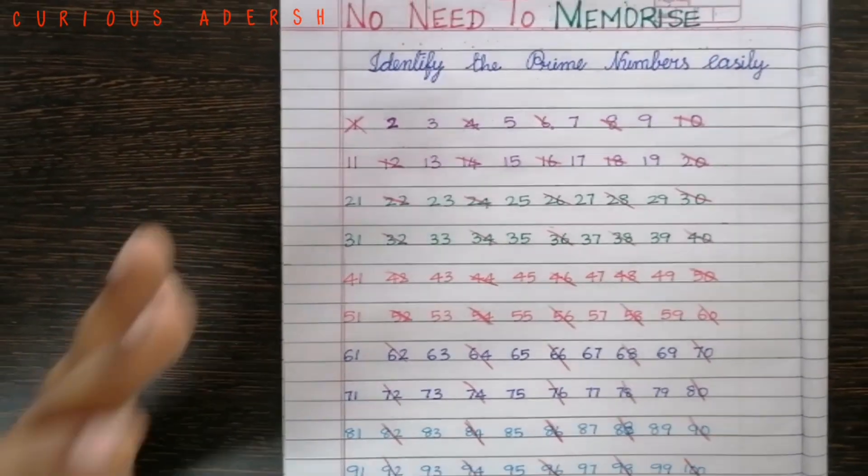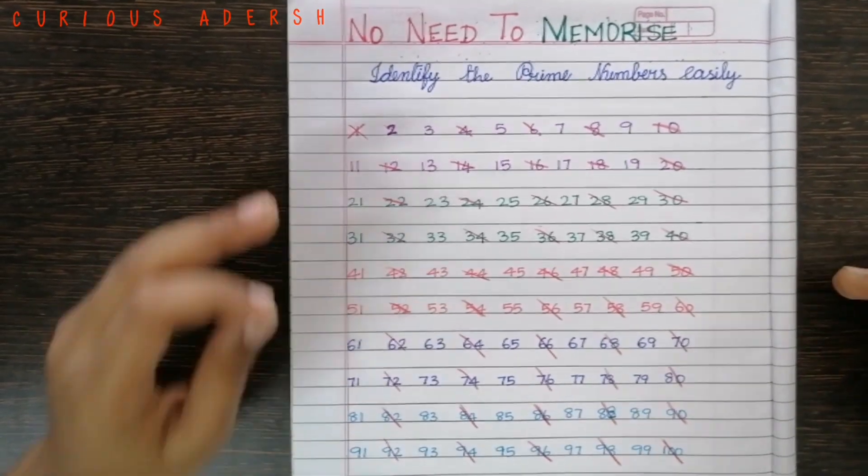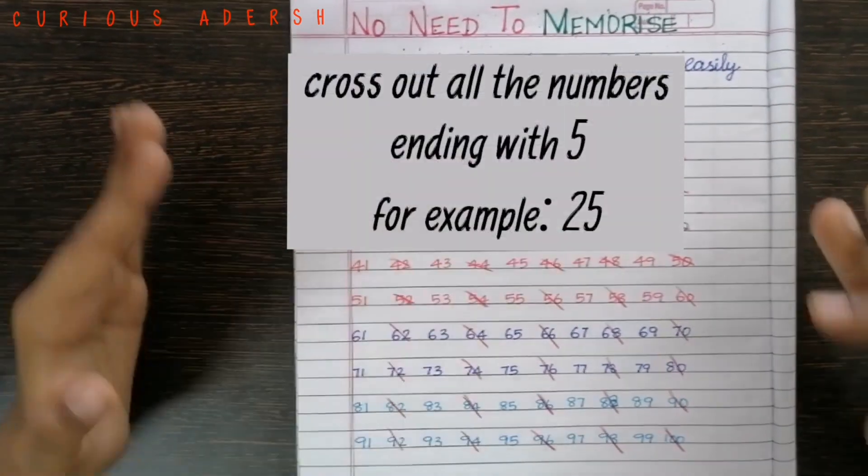We have crossed out all the even numbers. Now we'll cross the numbers ending with 5 except 5.